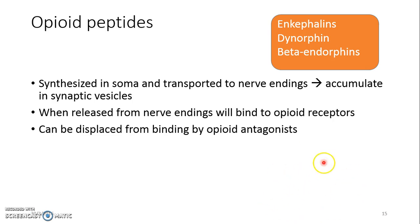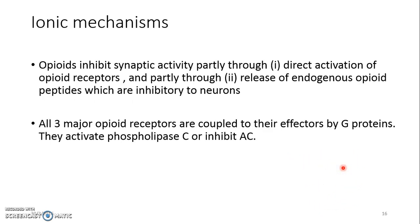Opioid peptides are also found in the neural plexus of the gut — in the GI system — and also in the adrenal medulla. Opioid analgesics prevent synaptic activity through two main mechanisms: by direct activation of opiate receptors, which prevents synaptic activity, and also via the release of endogenous opioid peptides, which are inhibitory to neurons.